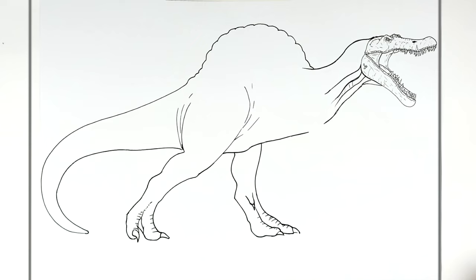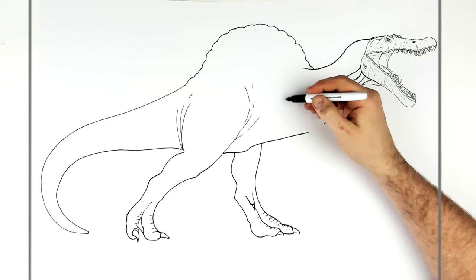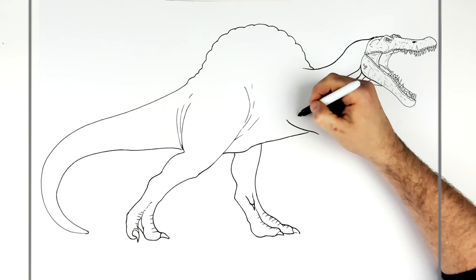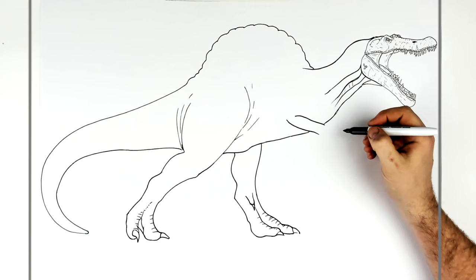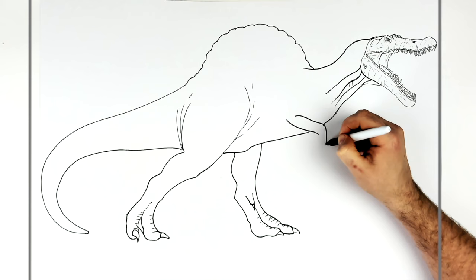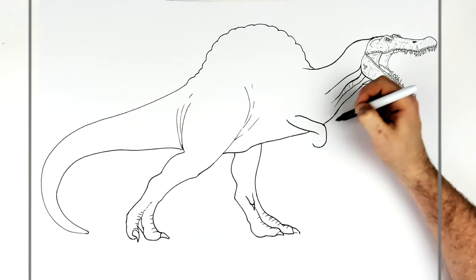So then his arms, right? And then we'll add textures and skin lines and everything. So we have one arm coming out here, right, in the other side of it. They're really small, like kind of like a T-rex, you know. And then this just curves down around.